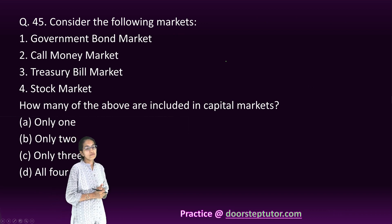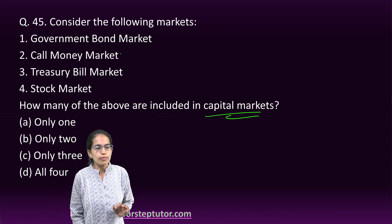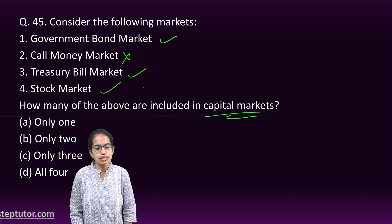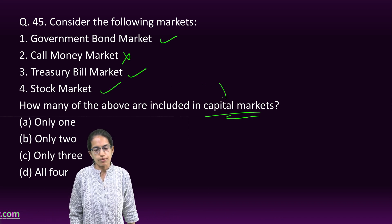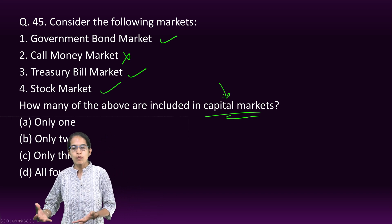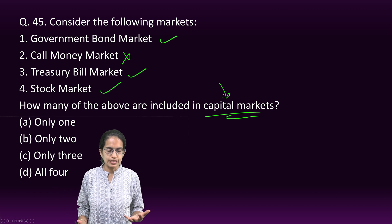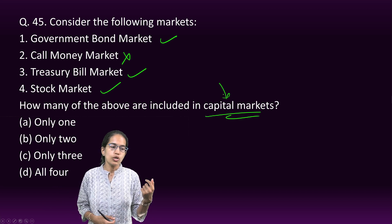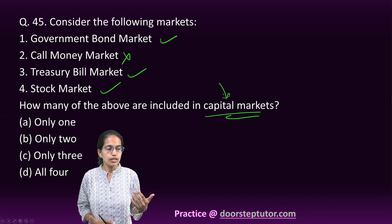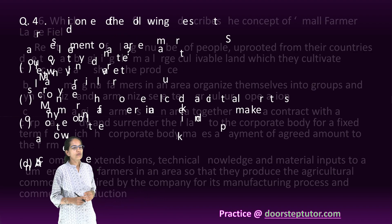The next question asks which instruments are included in the capital market. Call money market is not included in the capital market. Government bonds, treasury bills, and stock markets are all part of the capital market. Treasury bills are essentially government bonds. So options 1, 3, and 4 — three pairs — are correct.